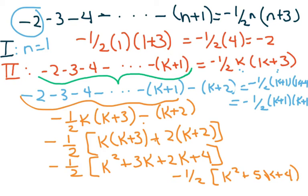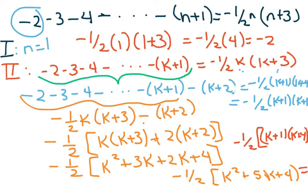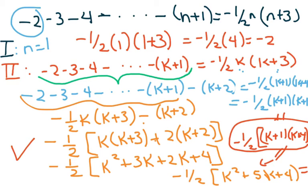Factoring: negative one-half times (k plus one)(k plus four). You can foil it out to verify — that does equal our target expression. So it holds true and we're done with this one.